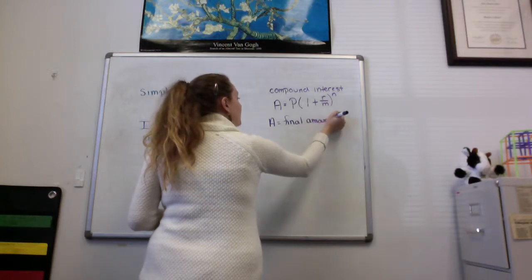Big A is the amount at the end. That's the final amount. Again, that's going to be money just like the principal was.